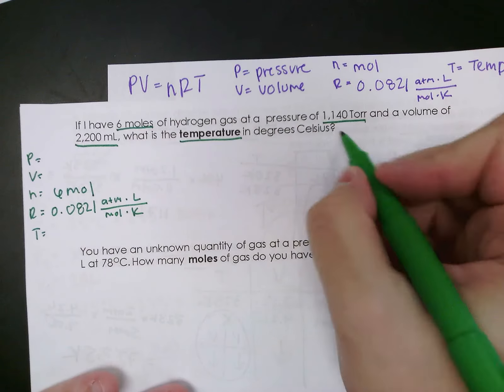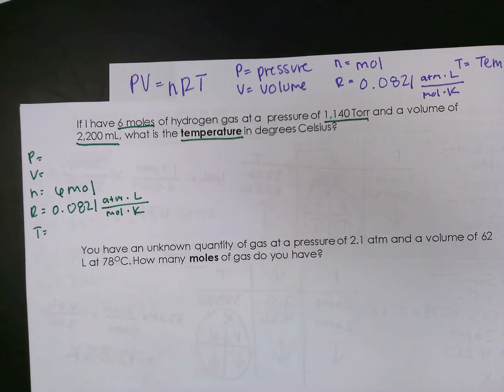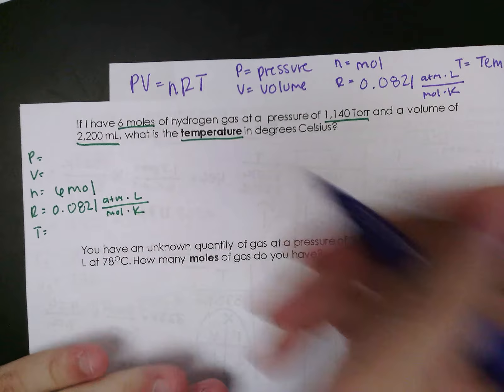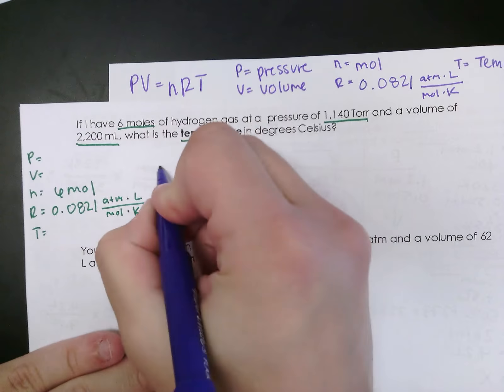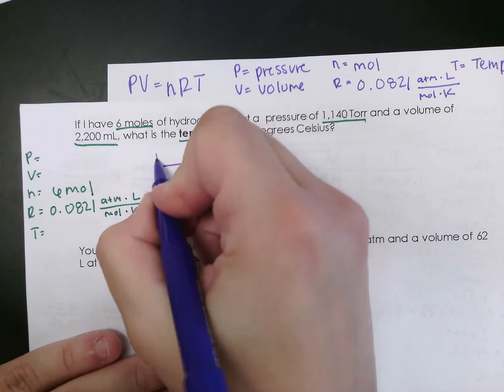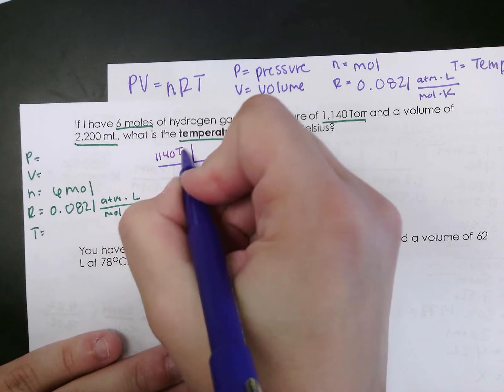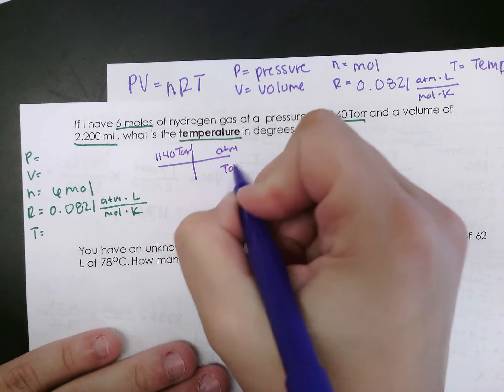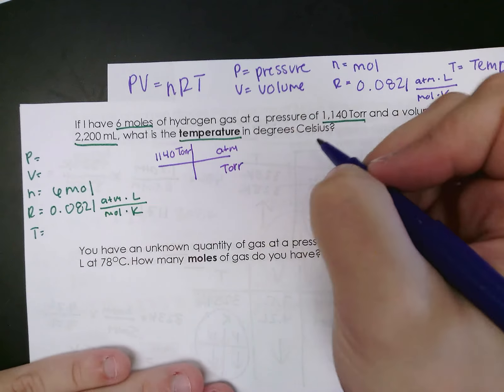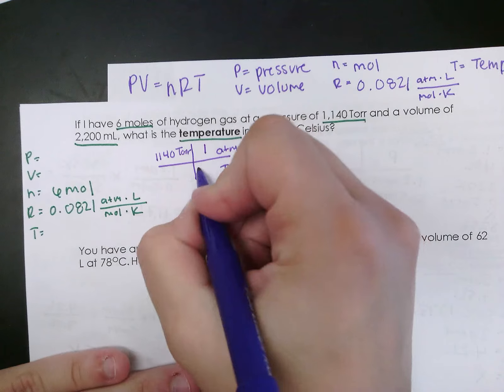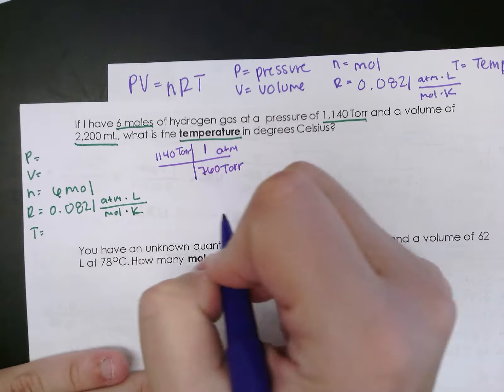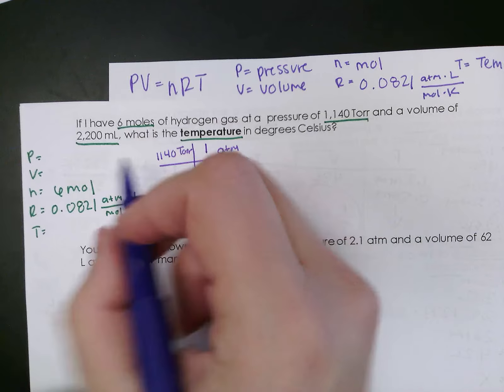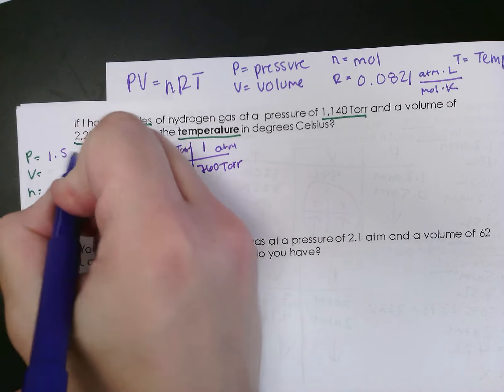Now my pressure is in torr and I need it in atmospheres. So I'm going to convert, just like we were before. In my T-chart, my given is what was from my problem in this case. I'm going to atmospheres and I'm getting rid of torr. Based on our unit conversion chart, I know that 1 atmosphere is equal to 760 torr. So I'm going to multiply across, divide down, and I'll get 1.5 atmospheres.